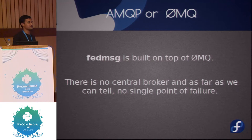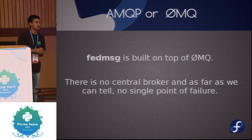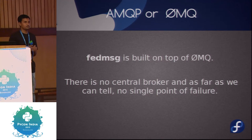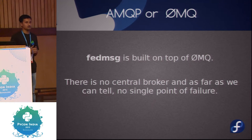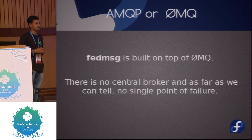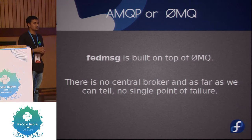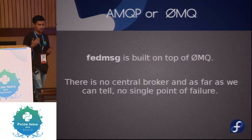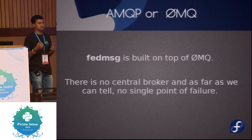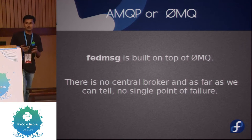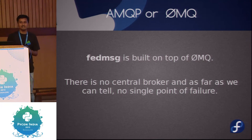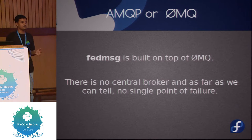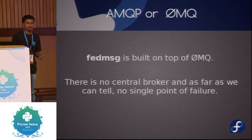The problem with the Fedora team was that there were plenty of disconnected components. Suppose somebody applies to the Fedora ambassador's team — a person had to manually go and create a Bugzilla ticket for that person. This was getting painful when a lot of people were trying to send an ambassador request. This similar problem existed all over the Fedora infrastructure.